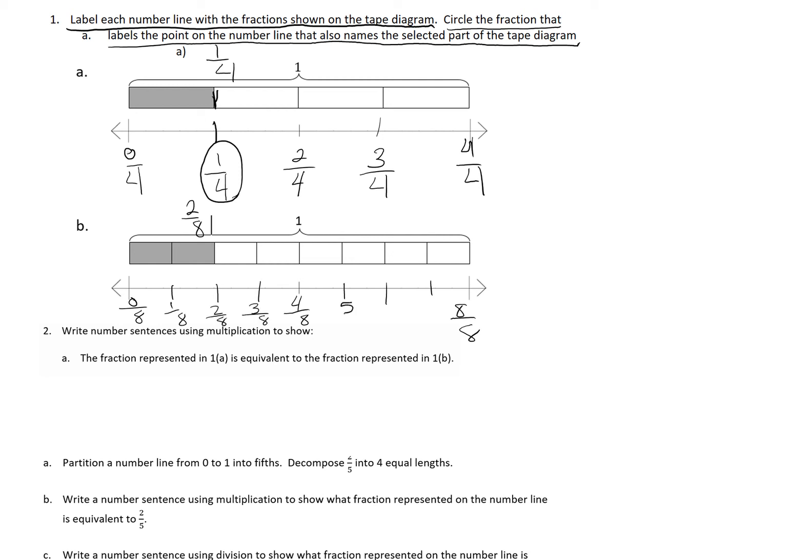In class we talked about it's really just like counting, and we made that connection that counting by whole numbers and counting by fractions are very similar. When we go to circle the fraction that labels the point on the number line that's also the point on the tape diagram, we're going to circle 2 eighths. Using these A and B, we're going to answer number 2.